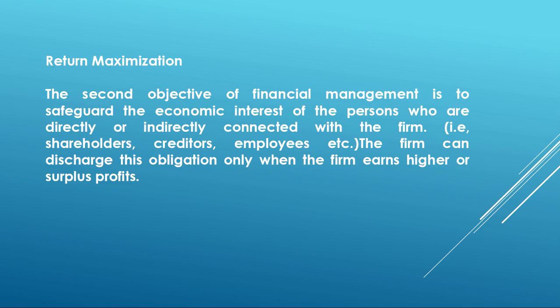The second objective is return maximization — that is, to safeguard the economic interest of persons who are directly or indirectly connected with the firm, such as shareholders, creditors, employees, etc. The firm can discharge this obligation only when it earns higher or surplus profit. For example, if a shareholder is investing an amount in a business, he will expect a return as a dividend. This is the basic obligation of the firm to fulfill.